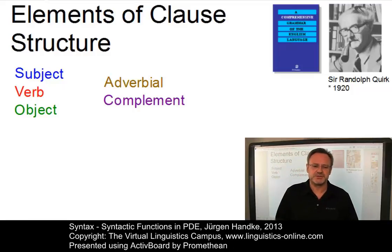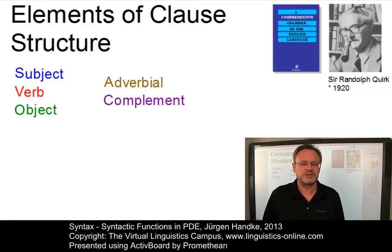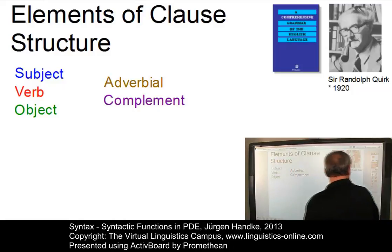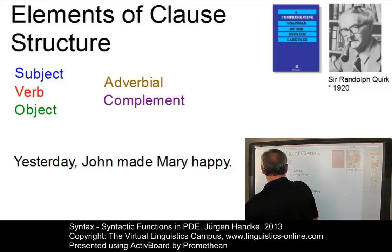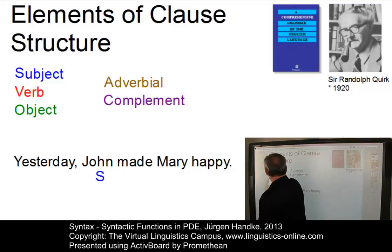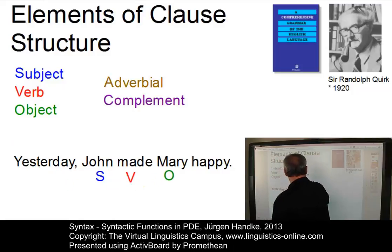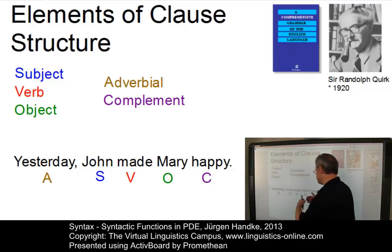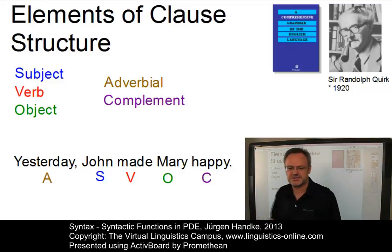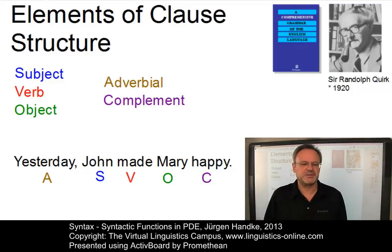Let us exemplify these elements — subject, verb, object, adverbial, and complement — on the basis of a very simple sentence: Yesterday, John made Mary happy. Here we have five elements and each of these elements realizes one syntactic function. Clearly, John is the subject, made is the verb, Mary is an object, happy is a complement, and yesterday is an adverbial.